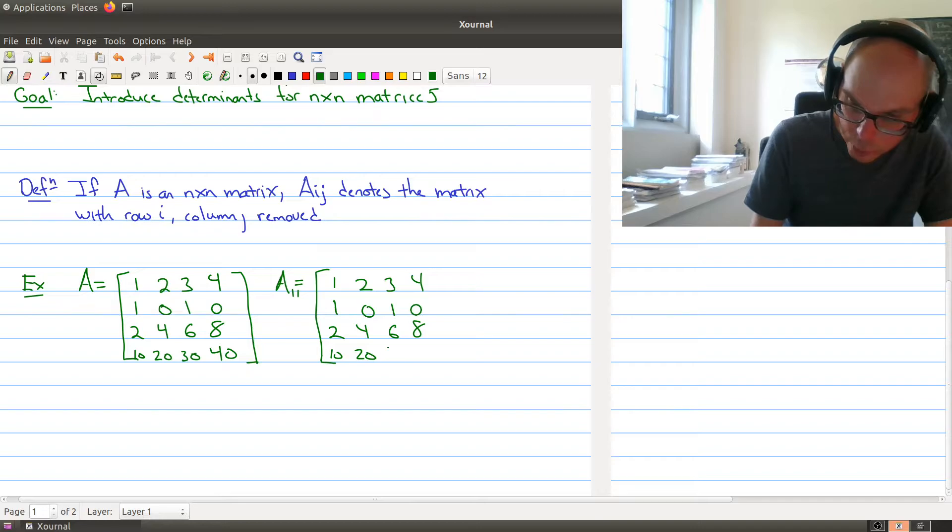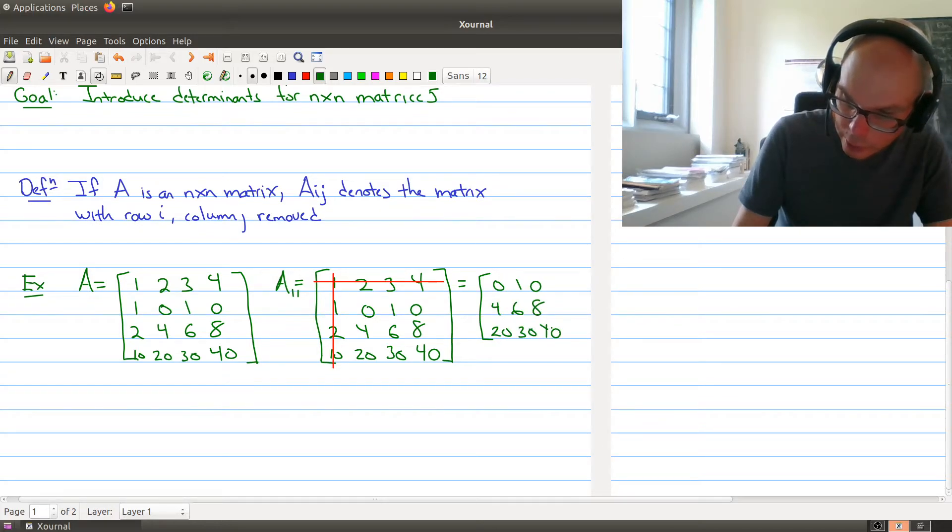10, 20, 30, and 40. And because I'm looking at the index 1, 1, I'm removing this column and I'm removing this row so that the matrix that I'm interested in is what's left over. So it's going to be 0, 1, 0, 4, 6, 8, 20, 30, 40. So I get a particular submatrix.